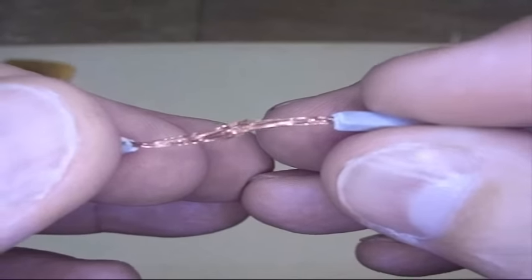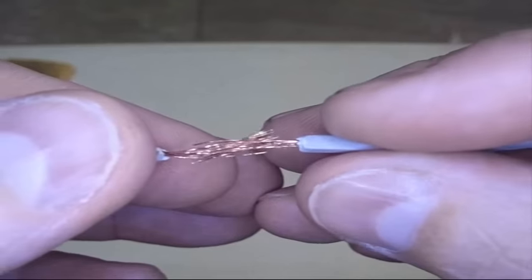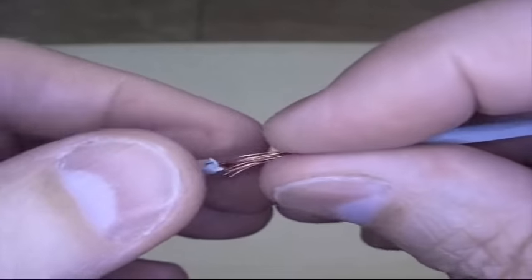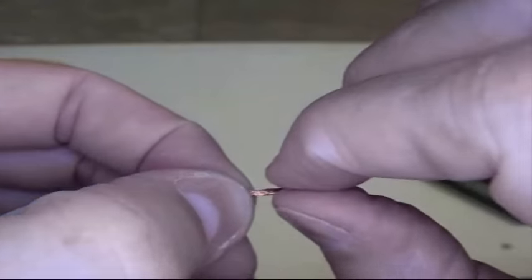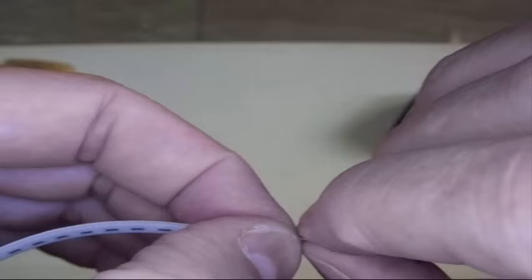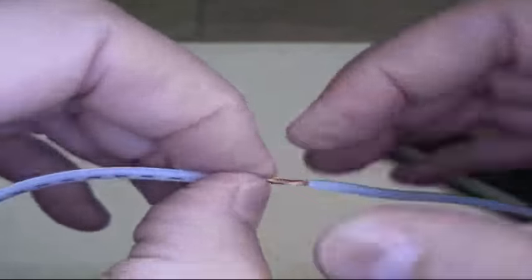Another technique is to push the wires together like this. I think they call this an X splice. And then to twist it like this to make it mechanically secure. This is a lot more difficult with heavier duty wire, I can tell you.